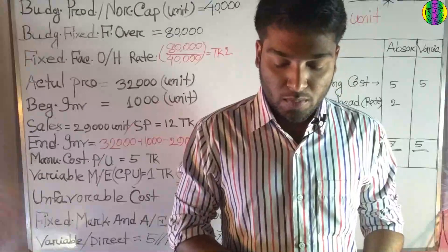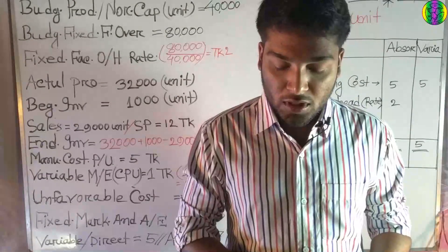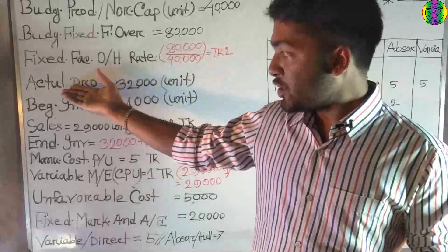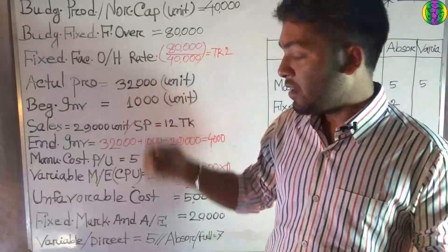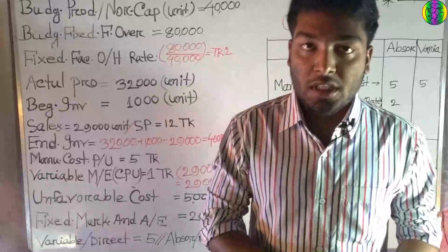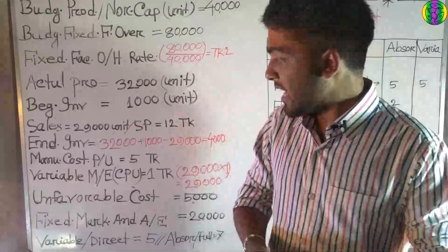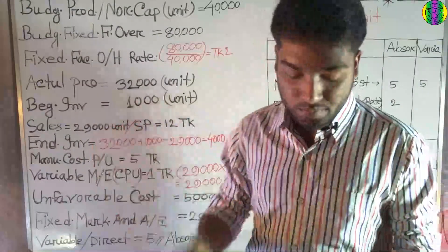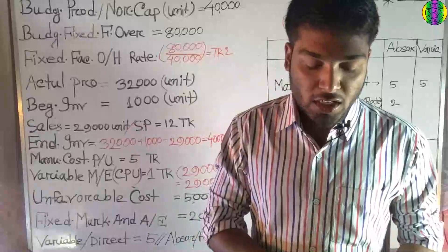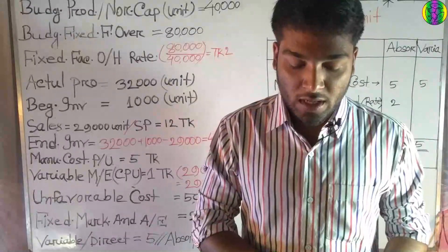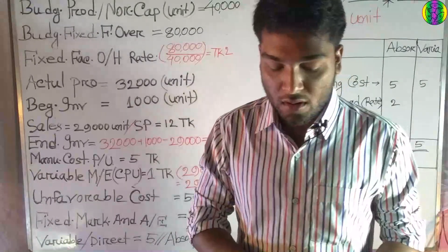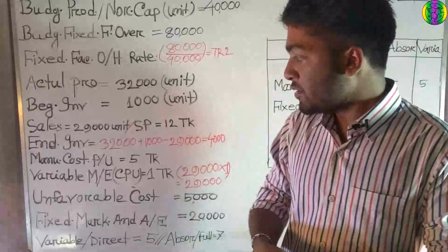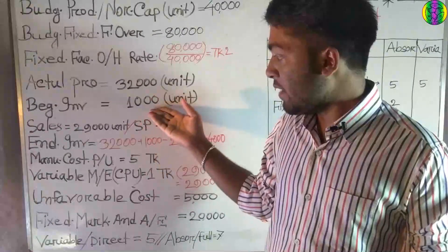The actual production is 8,000 units. Actual sales are 3,000 units. The finished goods inventory on January 1 — that is, the beginning or opening inventory — is 1,000 units.